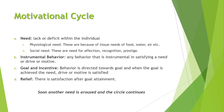The next stage of the motivational cycle is instrumental behavior — any behavior that is instrumental in satisfying a need, drive, or motive. For example, a small child cries, and that crying is instrumental in getting food from his mother. After instrumental behavior, the next stage is the goal or incentive. Behavior is directed toward a goal, and when the goal is achieved, the need, drive, or motive is satisfied — for instance, if a person is hungry, the goal is to eat food.